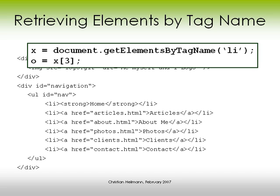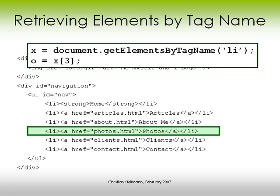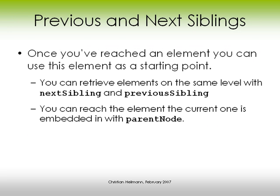So if we say getElementsByTagName('li') and access the third index in the array — which is visually the fourth one, because computers start at zero while we start at one — once you've reached an element, you can use it as a starting point. You can say give me the next sibling, the previous sibling, or the parent node, which is the element that contains the current one.